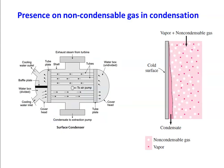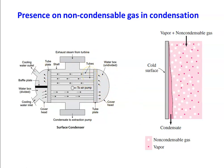The next topic is the presence of non-condensable gas in the condensation process. In a condenser, steam from the turbine flows on the shell side and condensate flows downward, removed by a condensate extraction pump. Cooling water flows through the tubes. The condenser operates at a pressure lower than atmospheric pressure — a vacuum — so that the turbine work output is maximized.